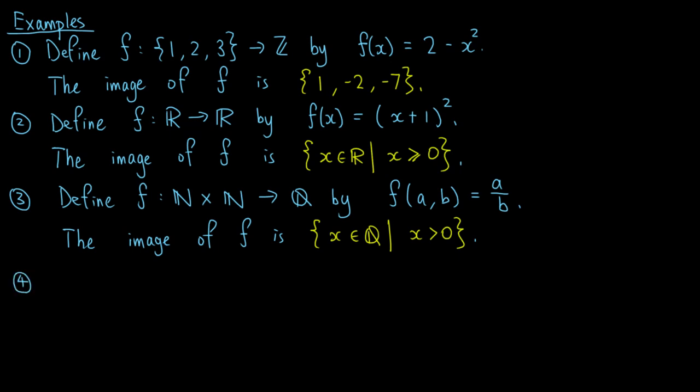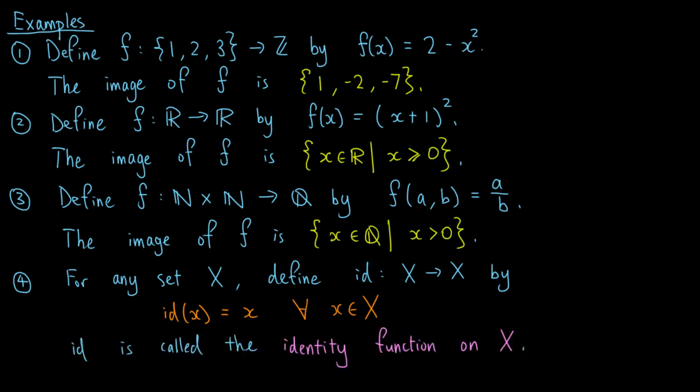As the last example, for any set x, we can define a function called id from x to x by id of x equals x for all elements x in the set x. Id is called the identity function on x.